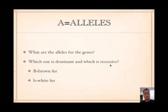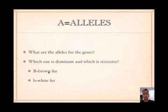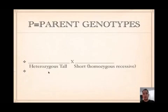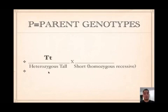The next step is to find the alleles — which one is dominant, which one is recessive — designating a capital for dominant and lowercase for recessive. Then figure out the parent genotypes by reading the problem. For example, if it says a heterozygous tall crossed with a short parent, the heterozygous tall would be big T, little t, and short would be little t, little t.